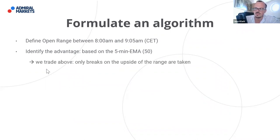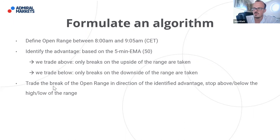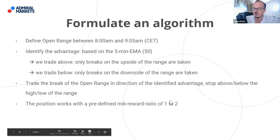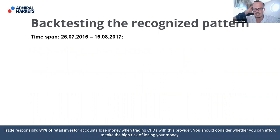The rule is: trading above the EMA 50, we only trade breaks on the upside; trading below, we only take trades on the downside. We trade the break in the direction of the identified advantage, place the stop above or below the range depending on where the breakout occurs, and the position works with a predefined risk-reward of 1:2 — 30-point risk multiplied by two gives you the take profit level. We have formulated the algorithm; we have an observation, an idea, a programmed expert advisor.